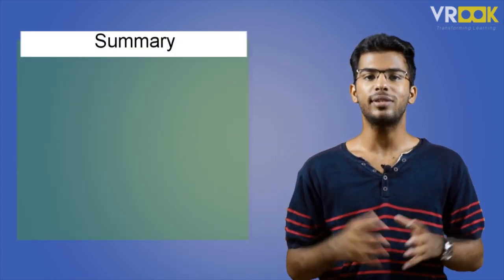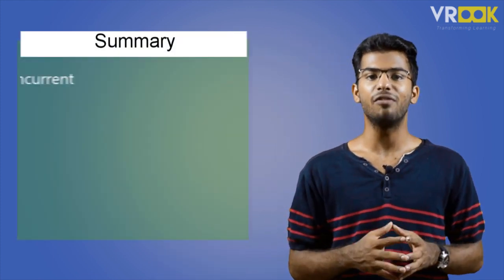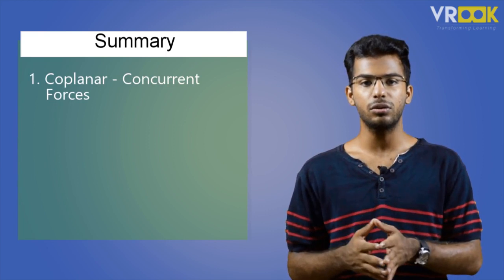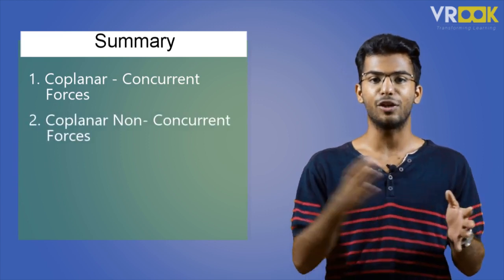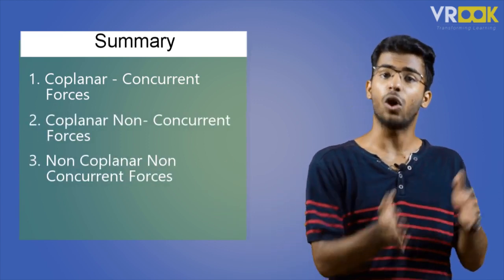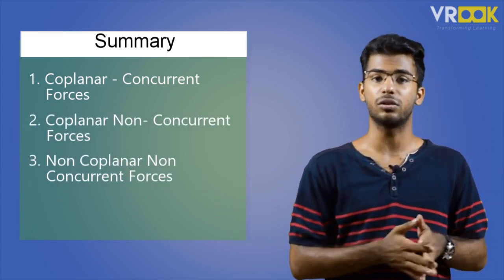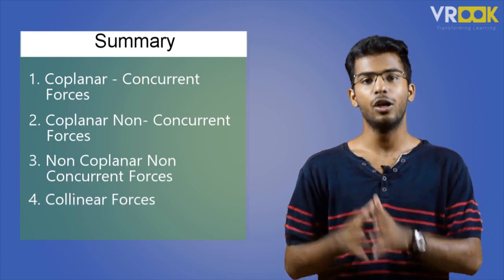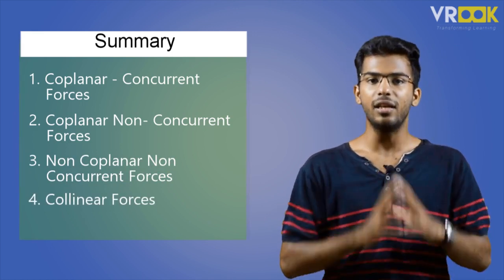These are the major types of force systems that act on a body. To sum up: we have coplanar concurrent forces, coplanar non-concurrent forces, non-coplanar non-concurrent forces, and collinear forces. In the next video, we will learn about the analysis and composition of forces.